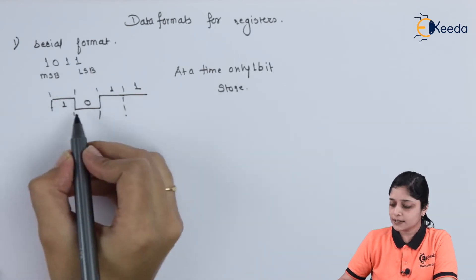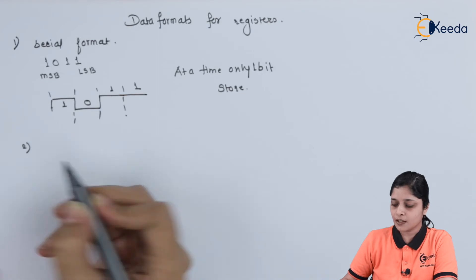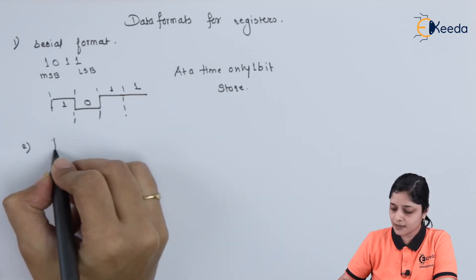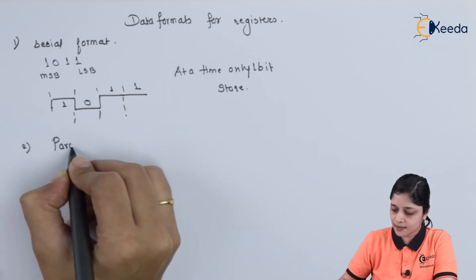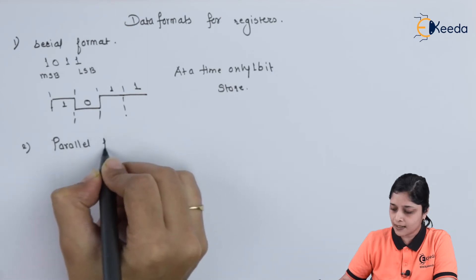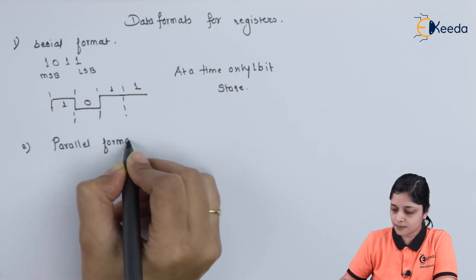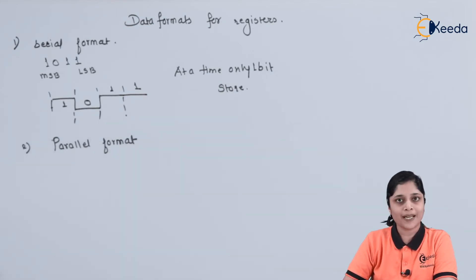Now this is our first format. For the second format, it is called as parallel format. In this format, the input bits are stored parallely. Means, at a time, all the bits are given to the flip-flops.